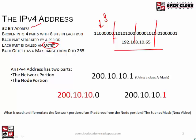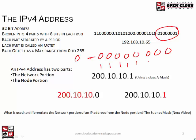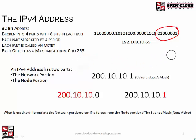If you have eight bits together, that's a byte. If you take one of these octets — eight bits — and all are zeros, it's zero in decimal. But if all eight bits are ones, that equals 255 in decimal. So the range of available numbers in each octet is from zero to 255. That's as high as you can go because you only have eight bits to work with.